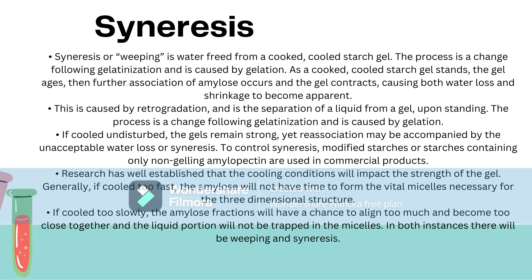Syneresis, also known as weeping, is water freed from a cooked, cooled starch gel. The process is a change following gelatinization and is caused by gelation. As a cooked, cooled starch gel stands, the gel ages and further association of amylose occurs, and the gel contracts, causing both water loss and shrinkage to become apparent. This is caused by retrogradation and is the separation of liquid from a gel upon standing. If cooled undisturbed, the gel remains strong, yet reassociation may be accompanied by unacceptable water loss. To control syneresis, modified starch or starches containing only non-gelling amylopectin are used in commercial products.